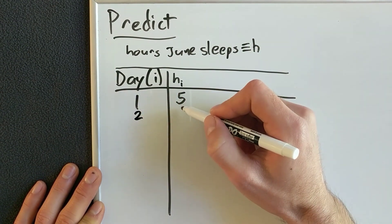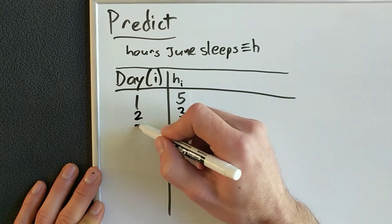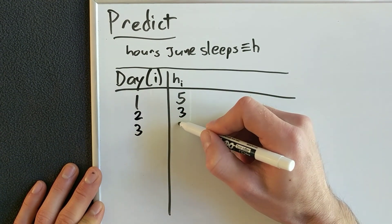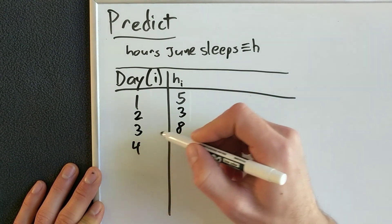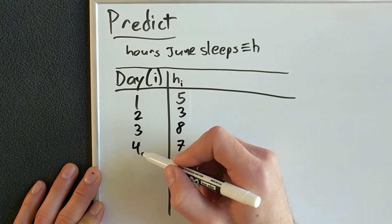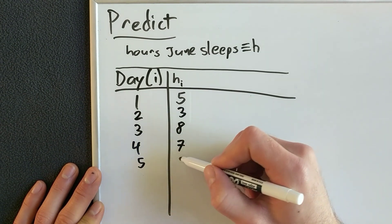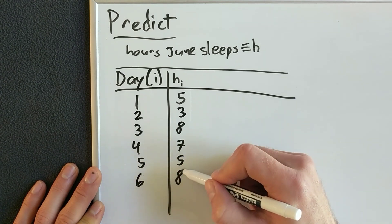On day two, June slept three hours. Day three, eight hours. Day four, seven hours. Day five, five hours. And day six, eight hours.